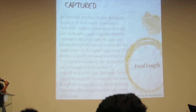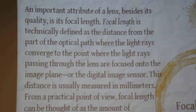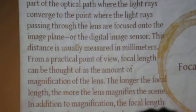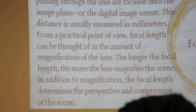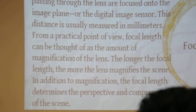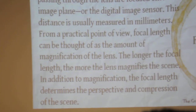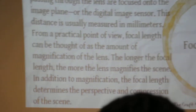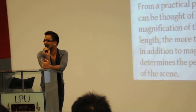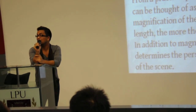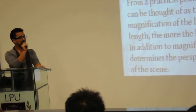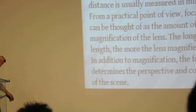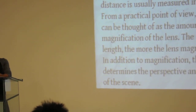We have the focal length. An important attribute of a lens besides the quality is its focal length. Focal length is technically defined as the distance from the part of the optical path where the light rays converge to the point where the light rays passing through the lens are focused onto the image plane. So basically, focal length is the distance. From a practical point of view, focal length can be thought of as the amount of magnification of the lens. What do you mean when you say magnification?